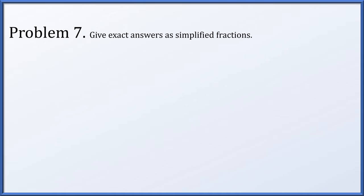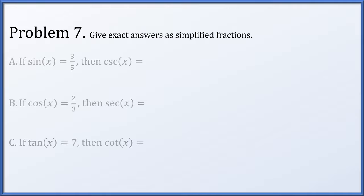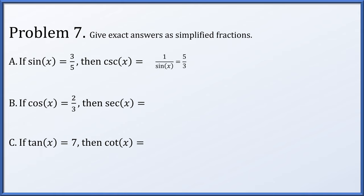In problem 7, we're going to give exact answers as simplified fractions. First, if sine x is 3/5, then what is cosecant x? Cosecant x is the reciprocal of sine, so if sine x is 3/5, then the cosecant is 5/3. Similarly, the secant is the reciprocal of cosine, so if cos x equals 2/3, then secant x equals 3/2. And finally, the cotangent is the reciprocal of tangent, so if tangent x equals 7, then cotangent x is simply 1/7.